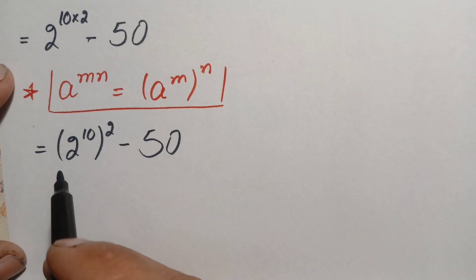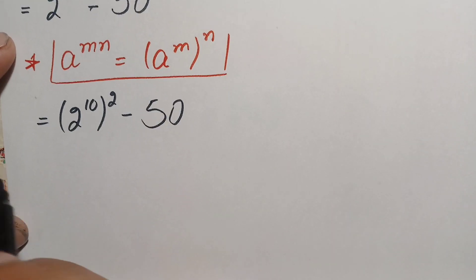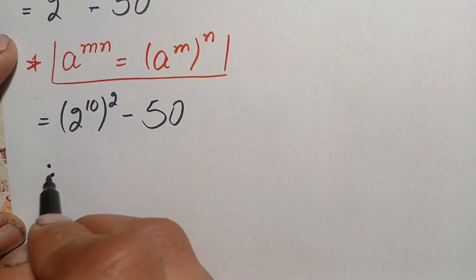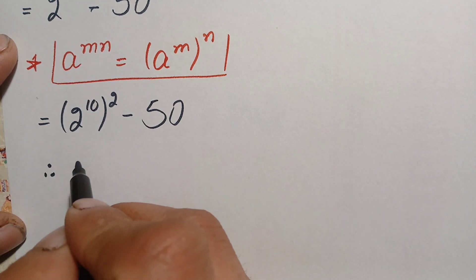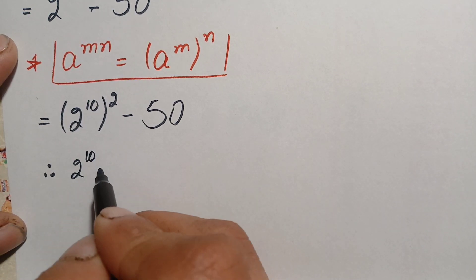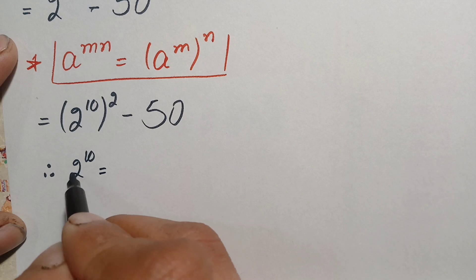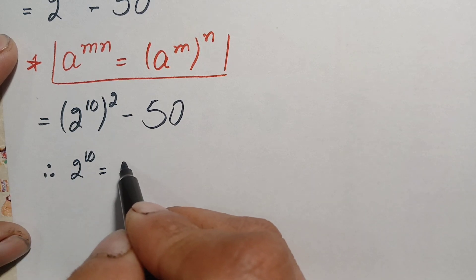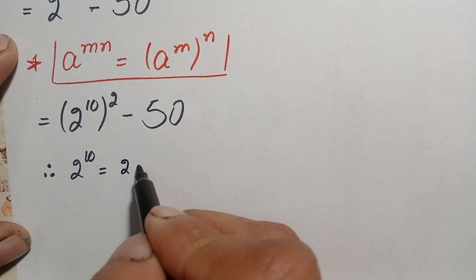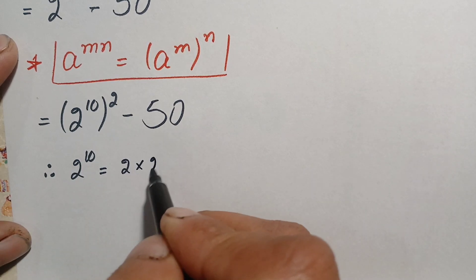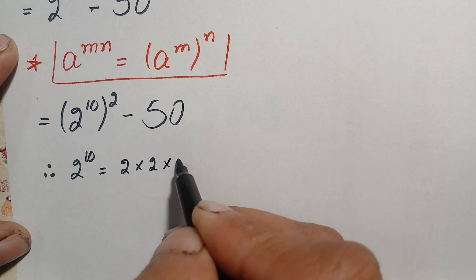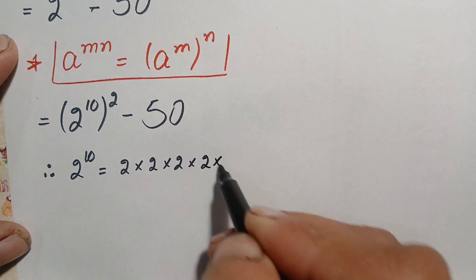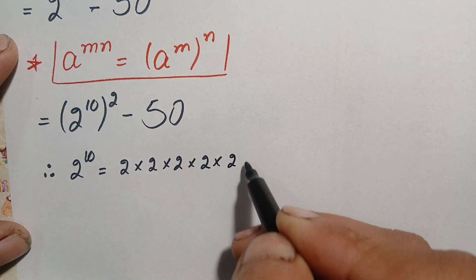We will find out the value of 2 raised to power 10. This means we multiply 2 by itself 10 times. Starting: 2 times 2 is 4, 4 times 2 is 8, 8 times 2 is 16, 16 times 2 is 32.